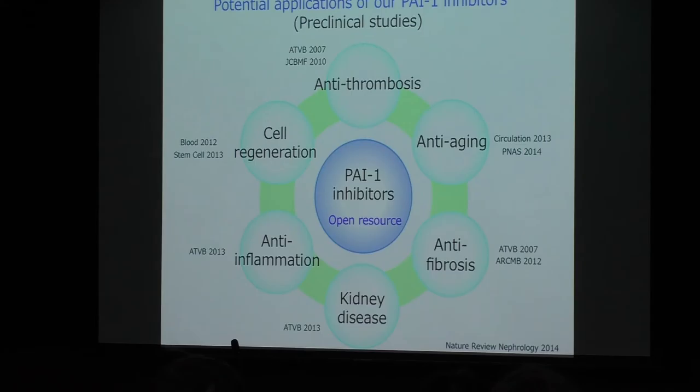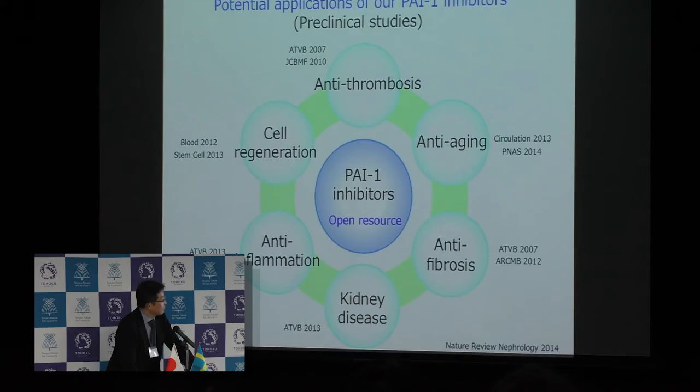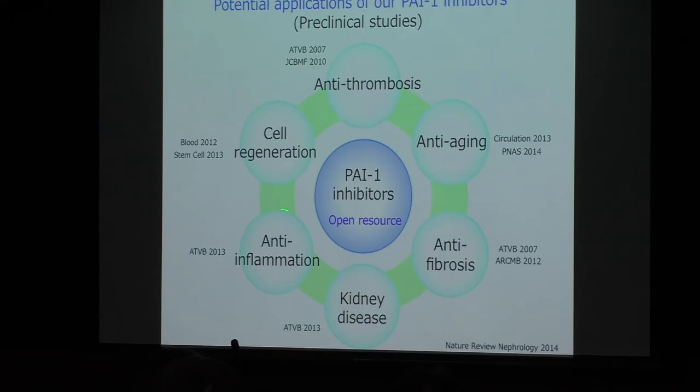We treat our PAI-1 inhibitors as open resources and provide them to many international researchers upon request. Thanks to their research, we have many interesting applications of PAI-1 inhibitors: antithrombosis, cell regeneration, anti-aging, anti-fibrosis in the lung, kidney disease prevention, and anti-inflammation. So PAI-1 inhibitors have several potential clinical applications.